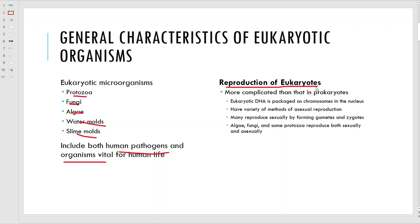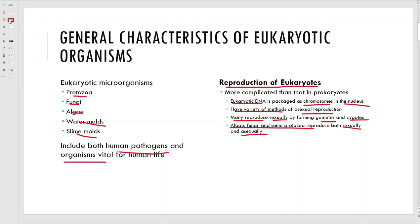Reproduction - these guys have a variety of methods. Since these are eukaryotes, their DNA is packaged as chromosomes and they have a nucleus. Some of these guys have all different types of ways of producing asexually. Some will produce sexually and form gametes and zygotes, similar to humans. Algae, fungi, and some protozoa can do either sexually or asexually, depending on circumstances.